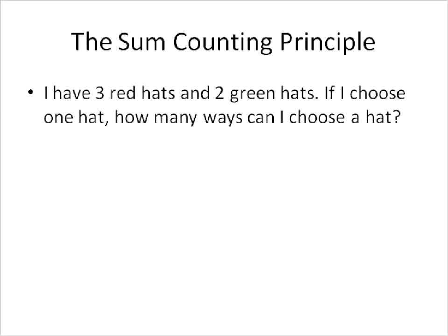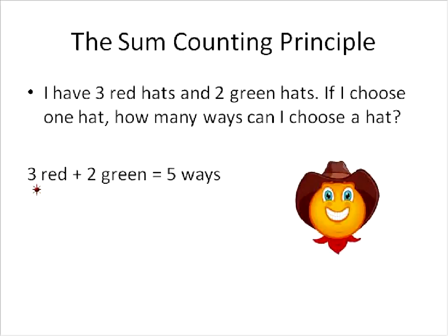Here's a sample question. If I have three red hats and two green hats, and I choose one hat, how many ways can I choose a hat? To find out the answer, I need to add them together. I have three red ways I can choose a hat and two green ways I can choose a hat, so I have a total of five different ways I can choose a hat.